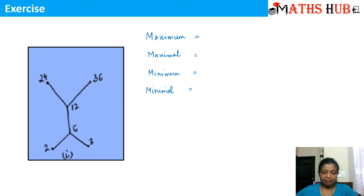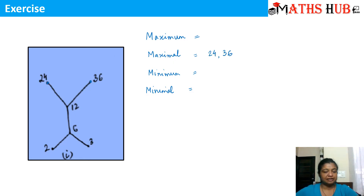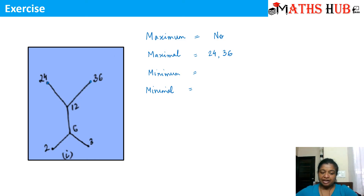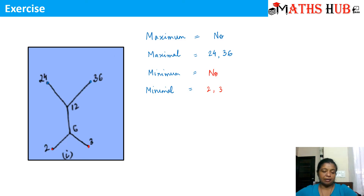In this Hasse diagram, if you look at the top positions, we have two elements beyond which there is no other element. So 24 and 36 are surely going to be the maximal elements because there is no other element greater than these. Can you find a single element which is greater than both? There is no single element, so in this case there will be no maximum element. Now if I look at the bottom positions of the Hasse diagram, we have 2 and 3 at the bottom. So 2 and 3 will definitely serve as the minimal elements, but since there is no single element which is minimum among them, there will be no minimum element.